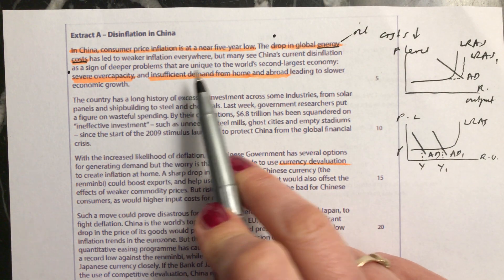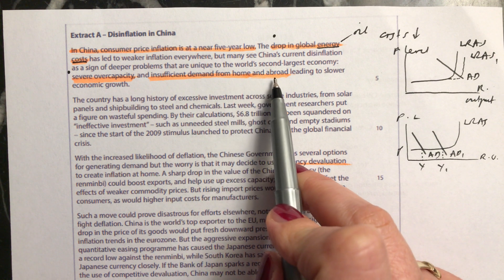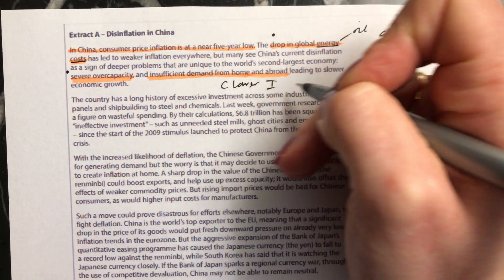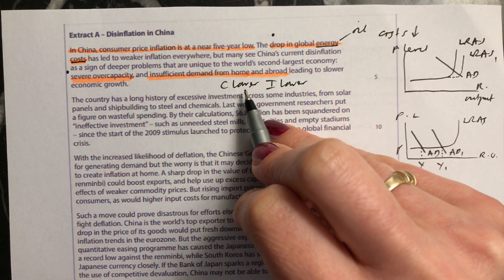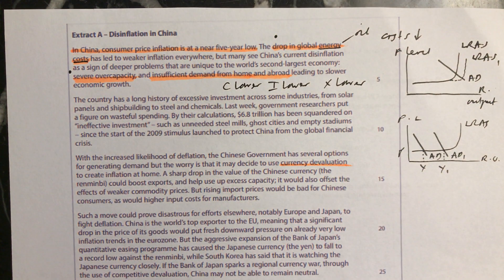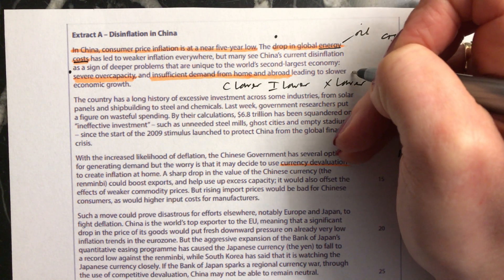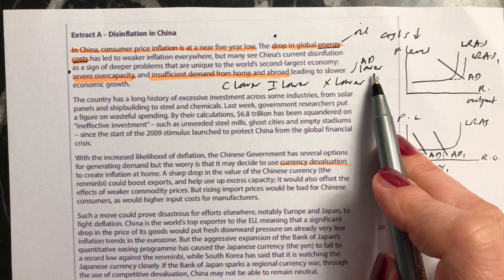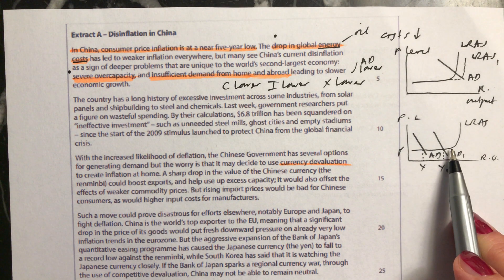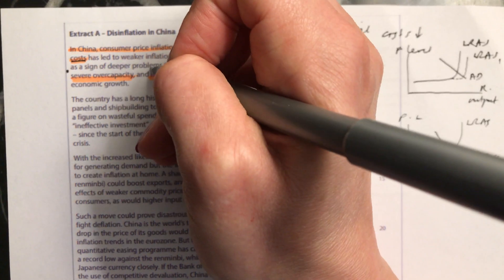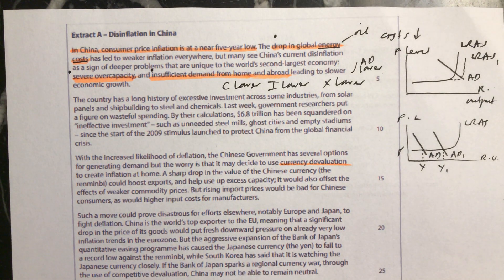A third factor you could talk about is insufficient demand from home and abroad. This means consumption is lower than it would be otherwise, investment is lower because firms don't want to invest given weak consumption, and exports are lower. All of these lead to aggregate demand being lower, so you won't get demand-pull inflation — you're less likely to have as much inflation, leading to disinflation. Remember, they only want two factors, but that's another option.